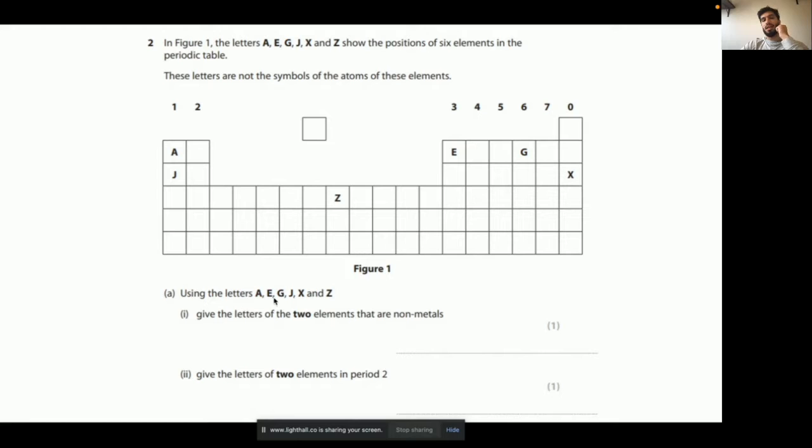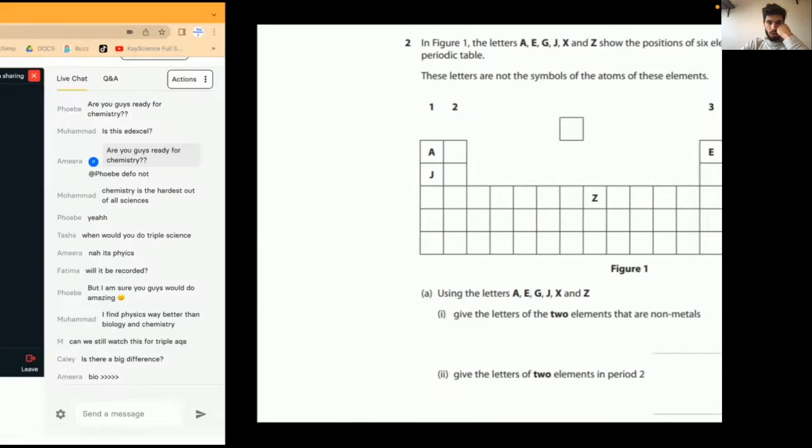Using the letters A, E, G, J, X, and Z, give the letters of the two elements that are non-metals. In the chat section, go. I'm going to check it in three, two, one, and what is it?